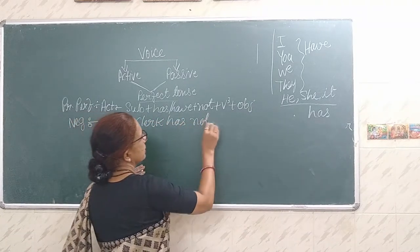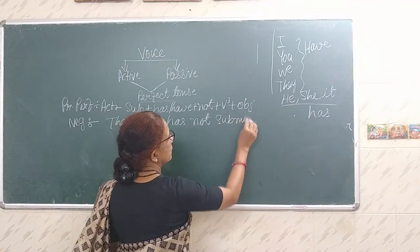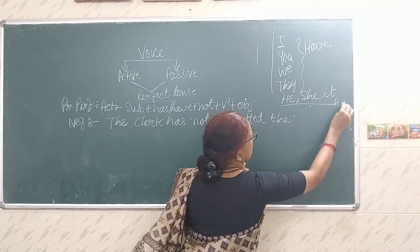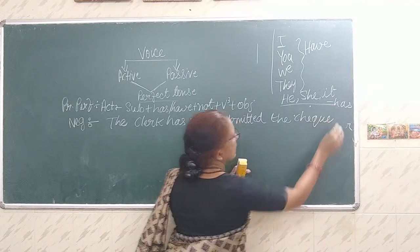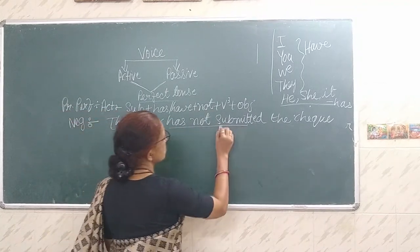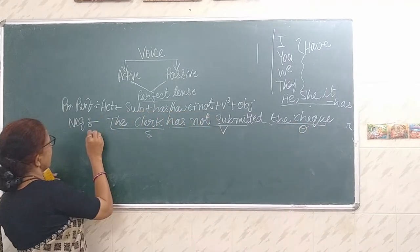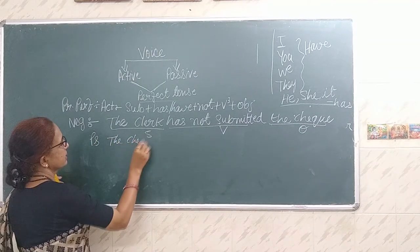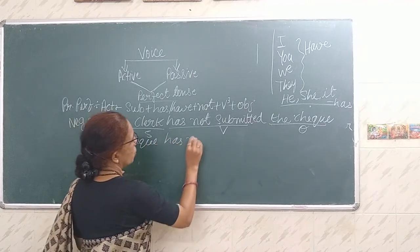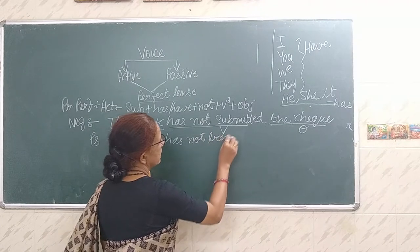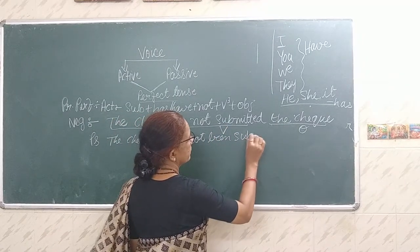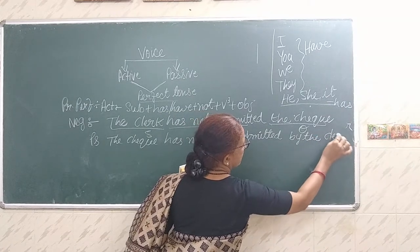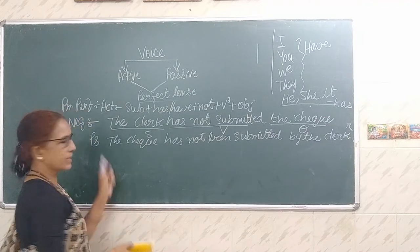Another example: 'The clerk has not submitted the check.' Subject is 'the clerk', 'has not submitted' is the verb, and 'the check' is the object. This is active voice, negative sentence. Passive: 'The check has not been submitted by the clerk' — or you can write 'hasn't'. This is the negative passive sentence.